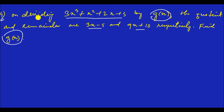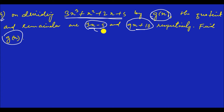In this question, if the cubic polynomial is divided by GX, the quotient and remainder are given. Then GX is what we need to find. In this polynomial, GX is defined.